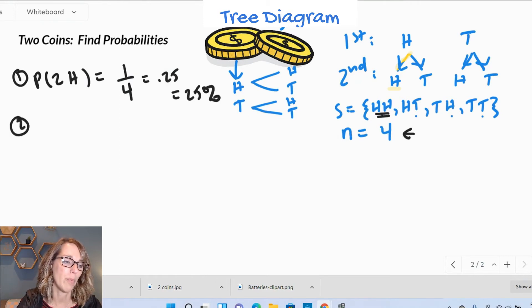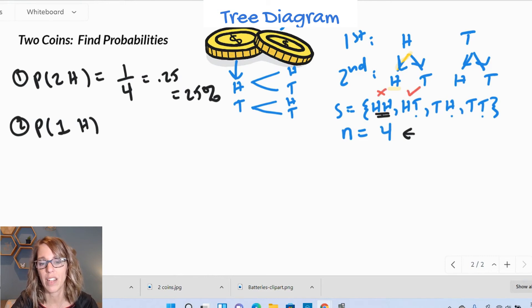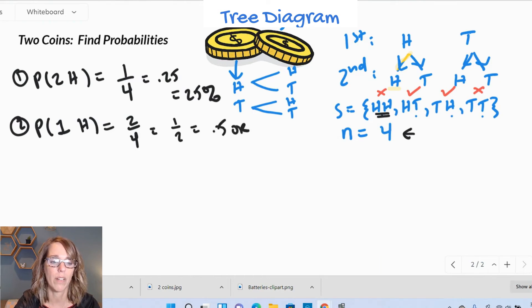Number two, what's the probability that we get exactly one H? So one head. Let's go ahead and go back through here. I'm going to grab my red pen now. I just want one H. So this one doesn't count, but I do want the H-T and I want the T-H. I do not want the T and the T. So back over here, that gives me two favorable outcomes out of the four. That reduces down to one half, 0.5 or 50%.